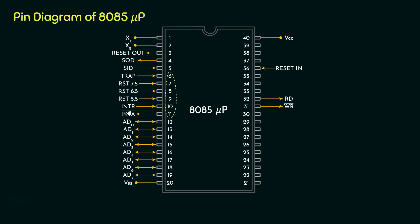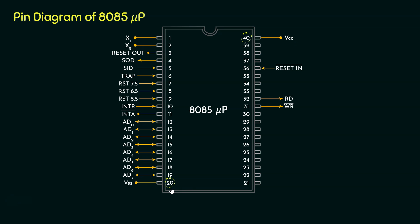Coming to pin 11, for the restart and INTR interrupts, the 8085 microprocessor has to generate INTA — that is, interrupt acknowledgement active-low signal — to the devices which have requested the interrupt. Then we learned about pins 12 to 19, that is D7 to D0, which are the data bus of the microprocessor. Whether they will be used for reading or writing data is determined using pins 31 and 32. Pin 32 is RD-bar, responsible for reading, and pin 31 is WR-bar, which stands for write. We also learned about pins 20 and 40: pin 40 is VCC, the +5V power supply, and pin 20 is the ground.